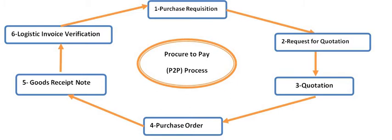The third stage of the P2P cycle is the Quotation. All vendors submit their quotations to the company. The company can view and create quotations using transaction code ME47, and compare all quotation prices using ME49. These two transaction codes — ME47 and ME49 — are very important for comparing all quotations with respect to their price, to identify the best price for procurement.